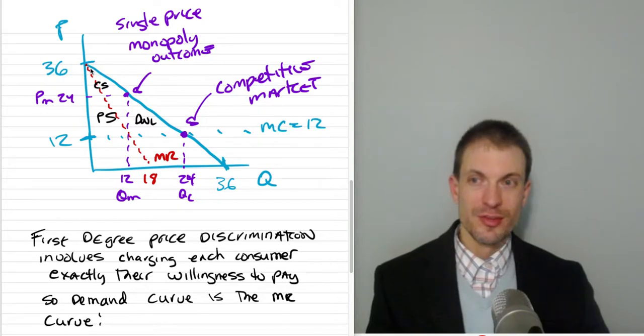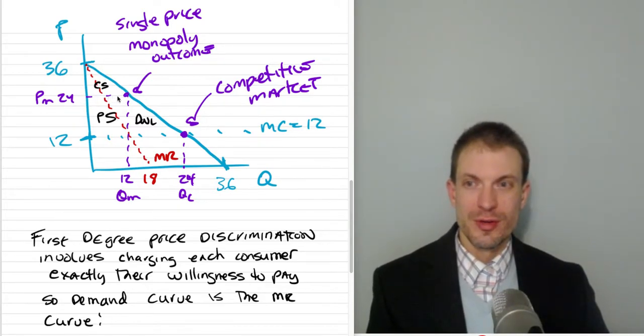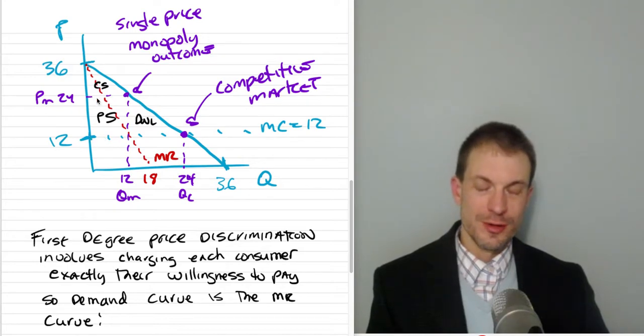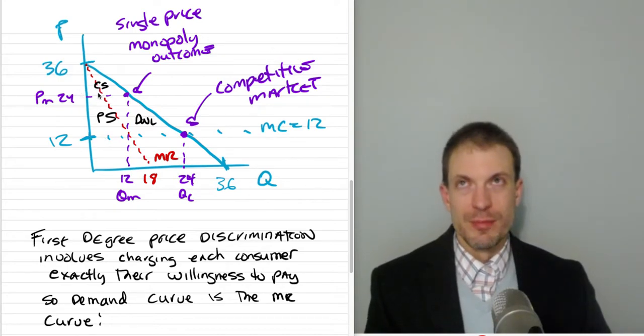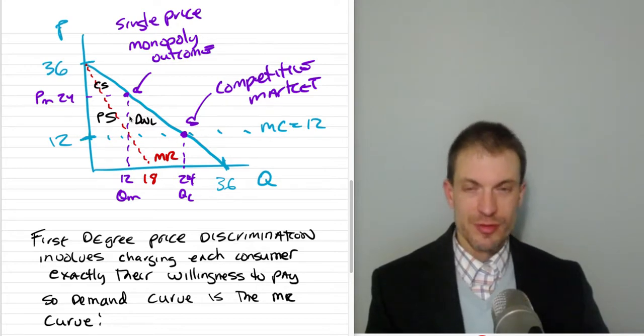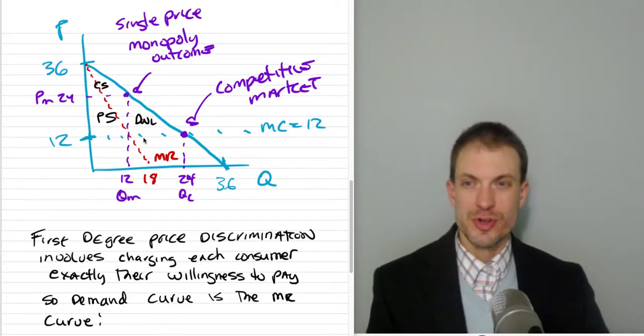Consumer surplus is defined as the area under the demand curve above the price. Producer surplus is the area below the price and above the supply curve or above the cost curve in this case. And then deadweight loss corresponds to the units that are foregone, that are not produced.